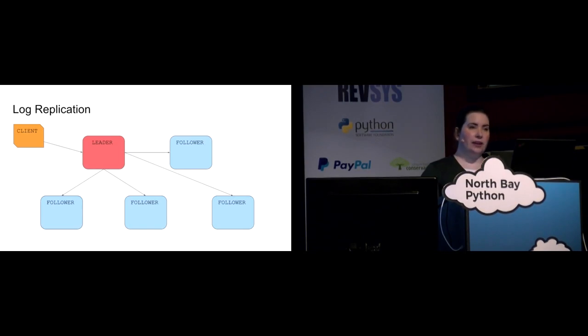And if the leader fails, we trigger a new election, and if a follower fails, well, we've got others, and the cluster can function normally as long as the majority of the participants have not failed.